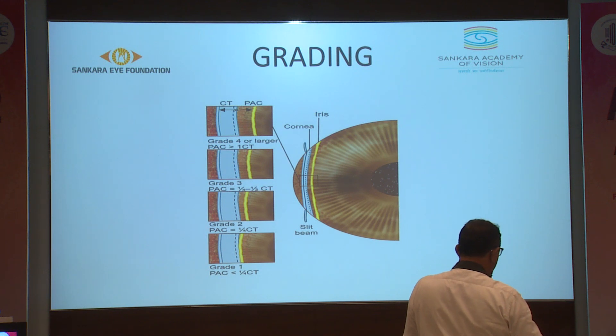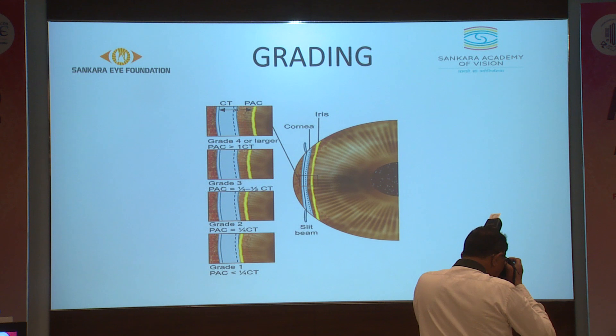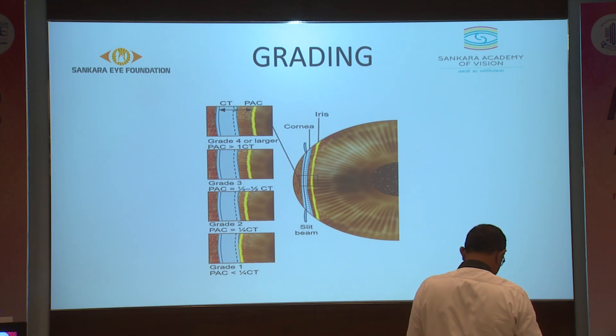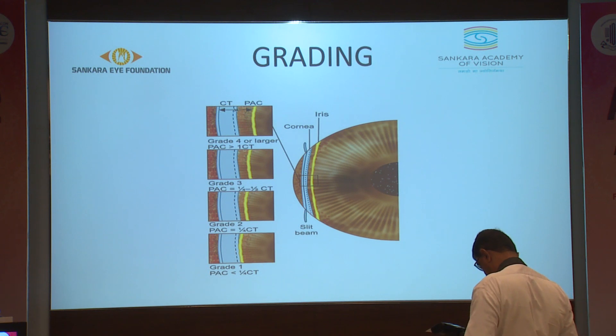Grade 2 is when it is equal to one-fourth corneal thickness. Grade 3 is when it is one-fourth to half the corneal thickness. And grade 4 is when it is more than or equal to the corneal thickness.